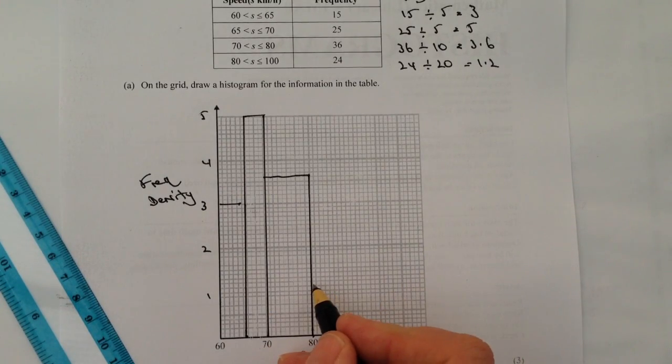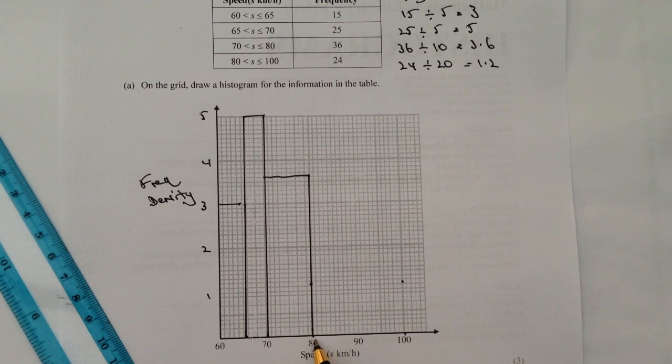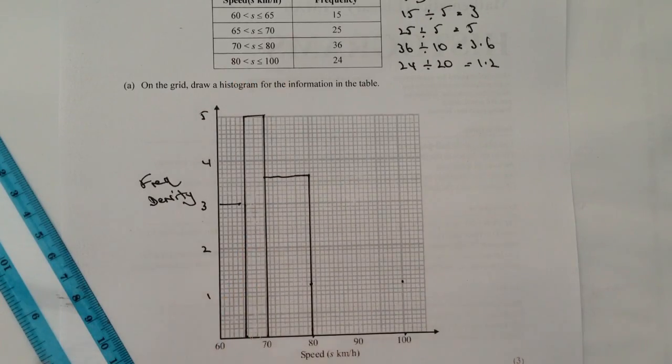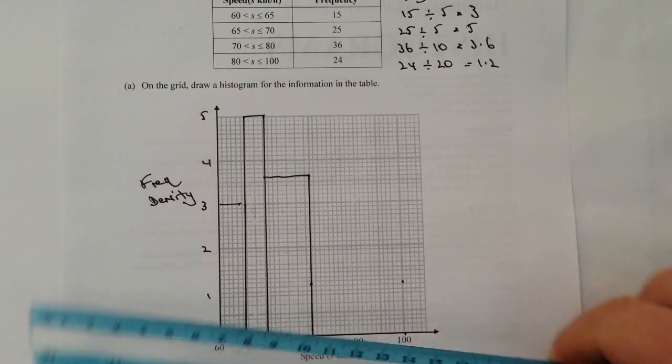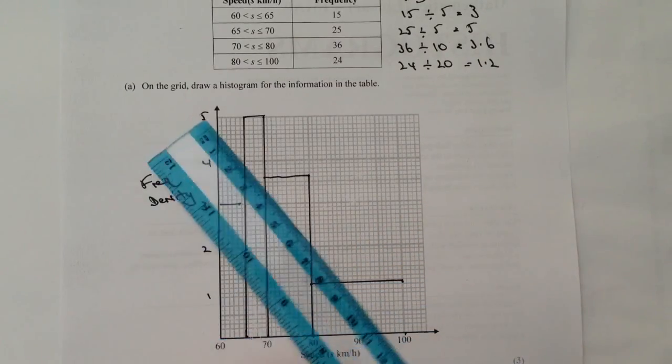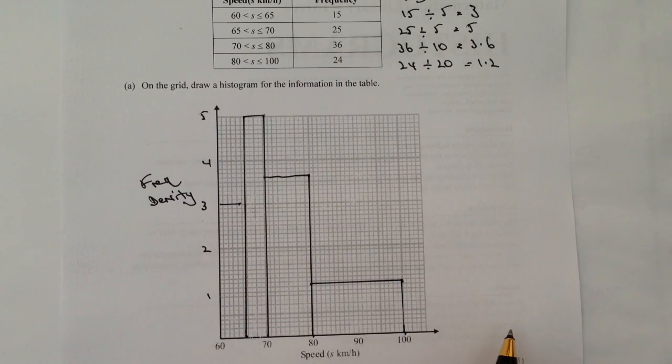And then the final one is 1.2, so my frequency density is 1.2. It's going to be about there over to there because the class width in this particular case is 20, and you can see that from the class width here on the table. So when I just draw that in, it will give me a diagram that looks like that. I appreciate I've not done that particularly tidily, but if you have a look at the website you'll be able to download this actual question with its worked answers.